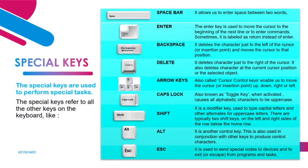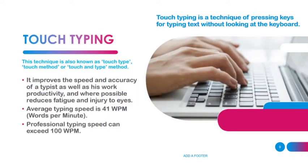The third type is special keys. Special keys are used to perform special tasks, and here are some of the main special keys with their functions listed. Now we come to the most interesting part of this video: touch typing. Touch typing is a technique of pressing keys to type text without looking at the keyboard. It improves the speed and accuracy of a typist as well as their work productivity, and where possible, reduces fatigue and injury to the eyes.